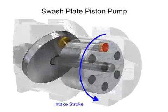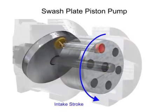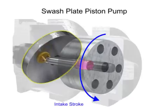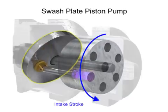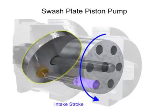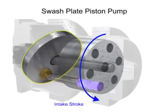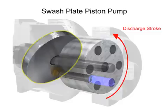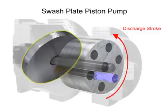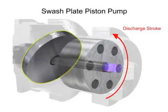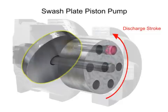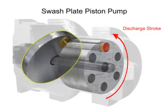On the intake stroke, a spring ensures the pistons pull back and maintain contact with the swash plate, causing fluid to fill the empty cavity left behind. On the discharge stroke, the angle of the swash plate forces the pistons back inside the piston block and discharges the fluid. The greater the slant on the swash plate, the further the pump pistons move and the more fluid they transfer.